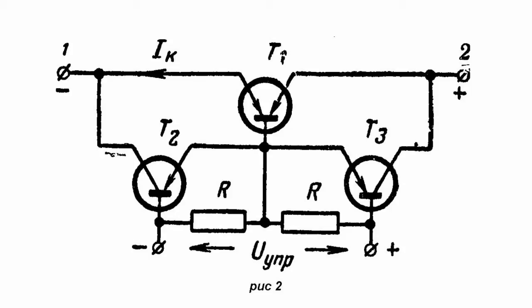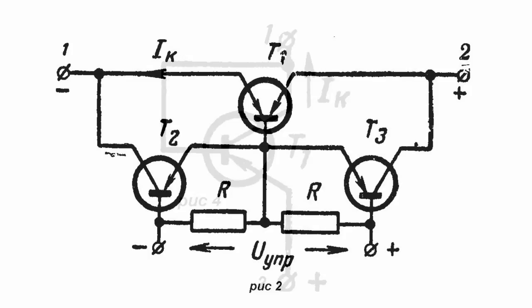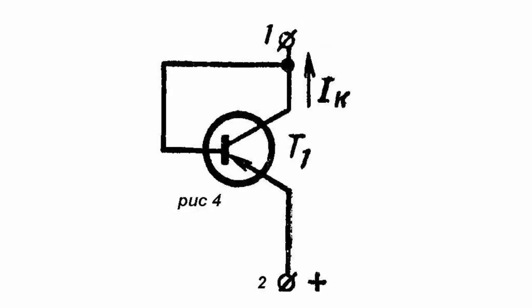For the voltage polarity shown in Figure 2, the right junction of the power symmetric transistor is the emitter, and the left is the collector. Thus, if transistor T2 is open and saturated and transistor T3 is closed, the power transistor is counter-connected as shown in Figure 4.